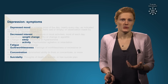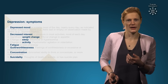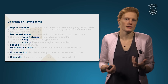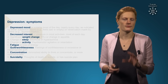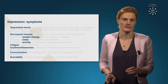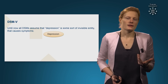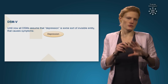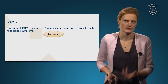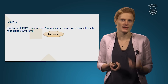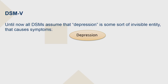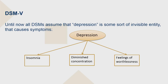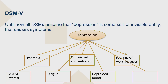These are the nine symptoms, and in order to get the classification 'depressed,' you would need five out of nine symptoms. There is a theoretical assumption underlying this — namely, the idea that you have a depression, and this depression is causing these symptoms. So depression is an invisible entity in your head, and because you're depressed, you have insomnia; because you're depressed, you have diminished concentration. Every symptom in this list is caused by something underlying — the invisible entity called depression.